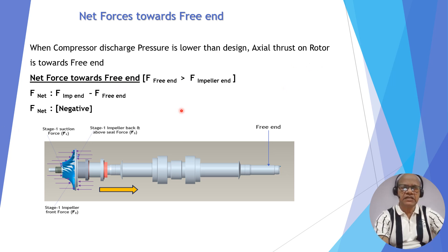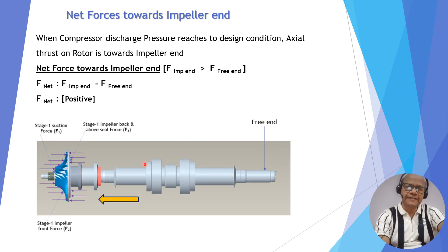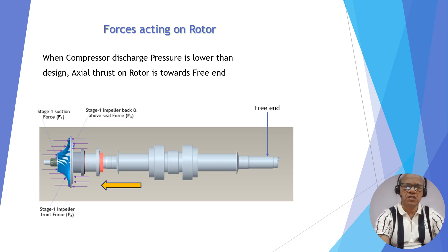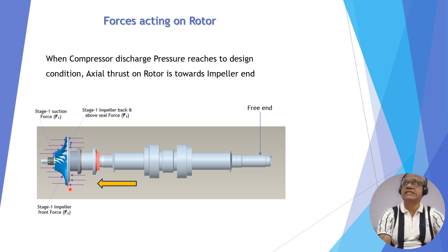When the machine is operating at lower discharge pressure, the back-wheel pressure is lower, so F3 is less than F1 plus F2, and the rotor is thrusted toward the free end — as shown in the diagram. When the compressor reaches design condition, the back-wheel pressure force becomes greater than the combined front and suction forces, the net force becomes positive, and the rotor is thrusted toward the impeller end. Therefore, at design condition for a single-stage machine, the rotor is always thrusted toward the impeller end.